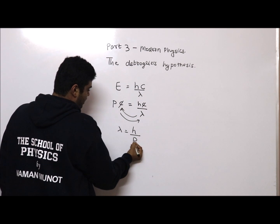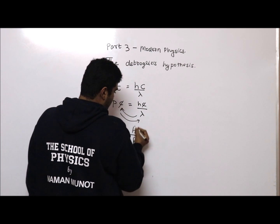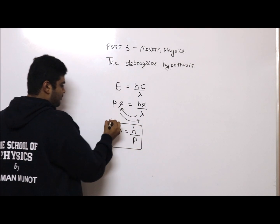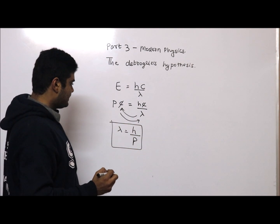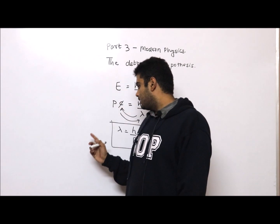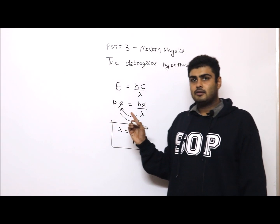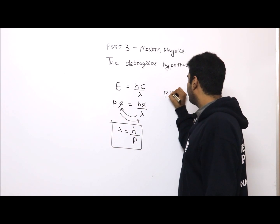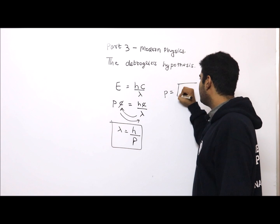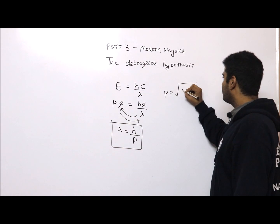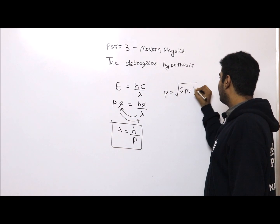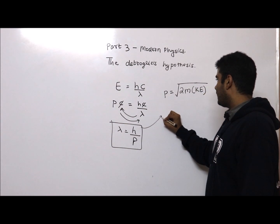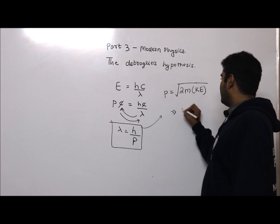When we rearrange, we get λ = h/p, which is Planck's constant upon the momentum. This λ = h/p is called the de Broglie wavelength. Now, momentum p can also be written as p = √(2m · KE), that is, under root of 2m times kinetic energy.